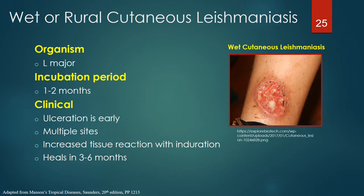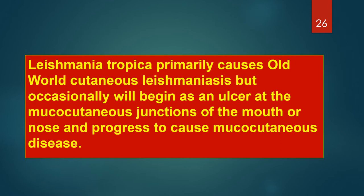Leishmania major is the primary organism causing wet cutaneous leishmaniasis. The incubation period is usually 1–2 months. Rural wet cutaneous leishmaniasis often results in early ulceration and is commonly seen in multiple sites. It is a more aggressive form associated with increased tissue reaction. Wet lesions reach their peak size of 3–6 centimeters over a 2–3 month period, followed by healing in 3–6 months unless complicated by secondary infections. Leishmania tropica can occasionally progress to cause mucocutaneous leishmaniasis beginning at the mucocutaneous junctions of the mouth or nose.